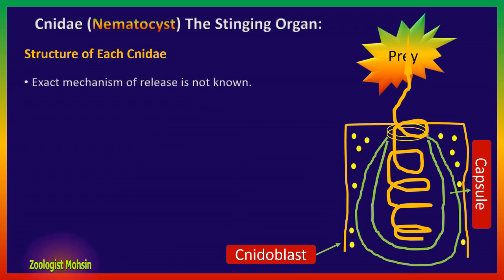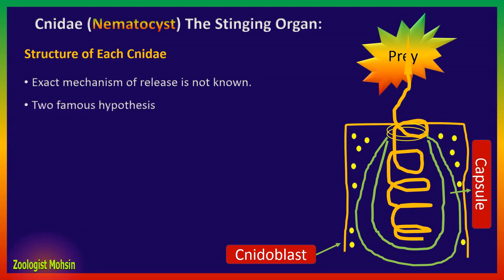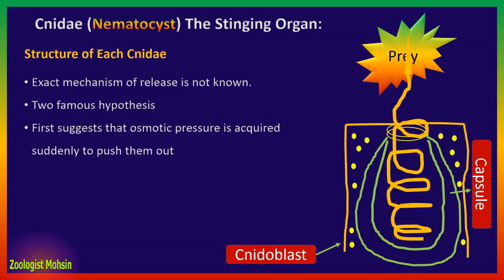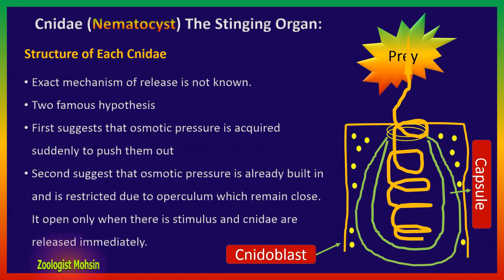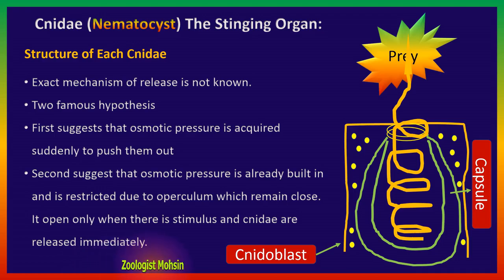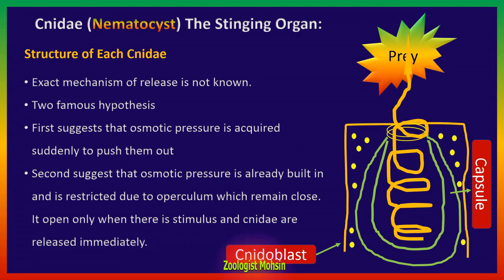The exact mechanism of release of these Cnidae is not known yet, but there are two famous hypotheses. The first hypothesis suggests that osmotic pressure is acquired suddenly to push them out. The second hypothesis suggests that osmotic pressure is already built in and restricted due to the operculum, which is closed. But as soon as the operculum opens when there is a stimulus, the Cnidae are released immediately and penetrate into the host to release toxins.